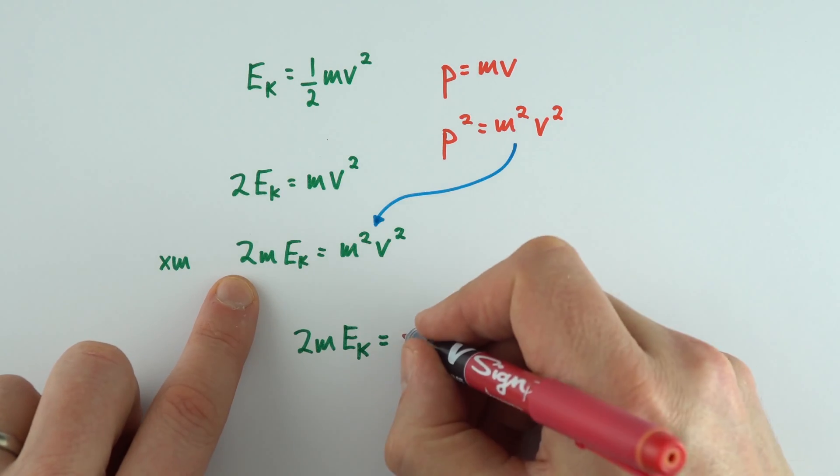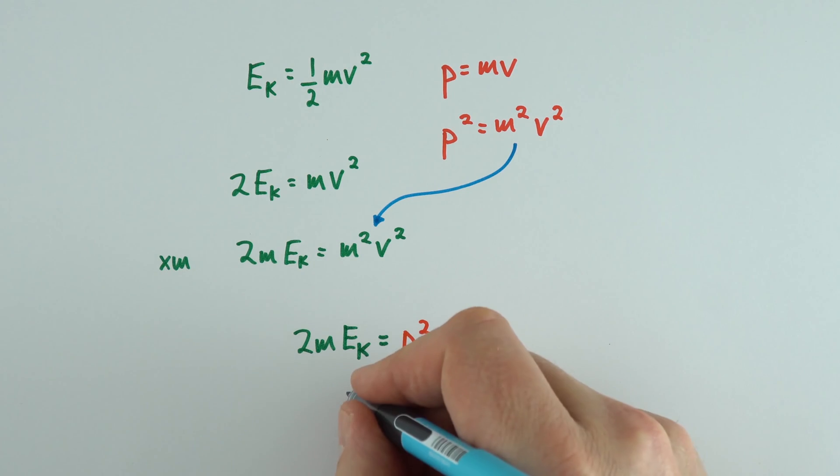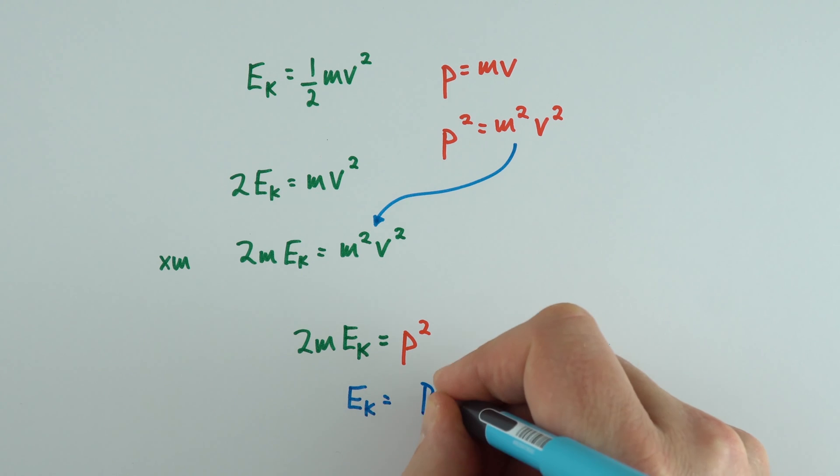So 2m Ek = p², and then finally I'm just going to make Ek the subject to say that the kinetic energy equals p² over 2m.